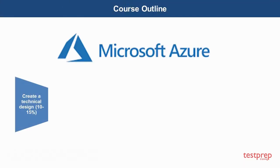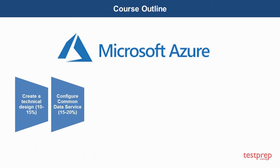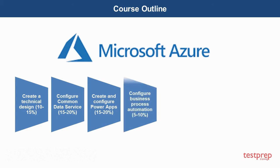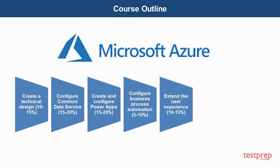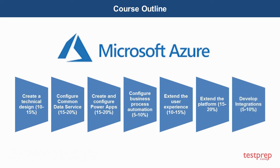Course outline: 1. Create a technical design, which comprises 10–15% weightage in the exam. 2. Configure Common Data Service, which comprises 15–20% weightage. 3. Create and configure Power Apps, which comprises 15–20% weightage. 4. Configure business process automation, which comprises 5–10% weightage. 5. Extend the user experience, which comprises 10–15% weightage. 6. Extend the platform, which comprises 15–20% weightage. 7. Develop integrations, which comprises 5–10% weightage.